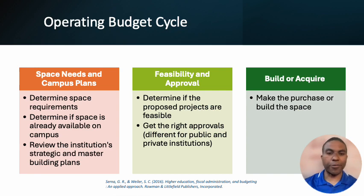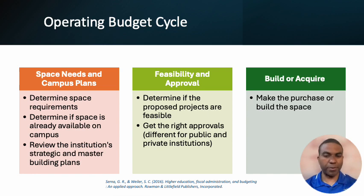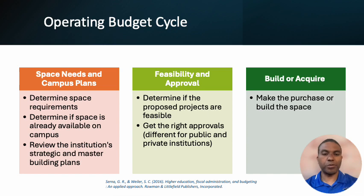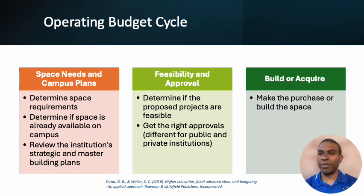Let's start with the operating budget cycle. This is probably going to occur over three to four years and has three basic parts with some steps underneath. The first phase is looking at the space needs and the campus plans — figuring out what your space requirements are going to be, whether you already have space on campus you can use, and looking at your institution's strategic plans and master building plans — maybe if you have a site to build on, or a building that needs to be repaired or demolished.